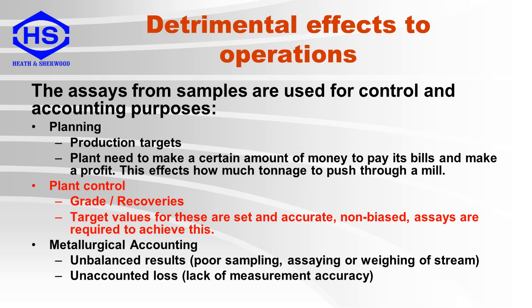This is a quick review of the detrimental effects to operations of incorrect results. The assays from samples produced by samplers are used for process control. This includes grade and recoveries, where recovery is a derived result from a combination of assay results. Target values for these are set or adjusted, and accurate, non-biased assay results are required to achieve this.